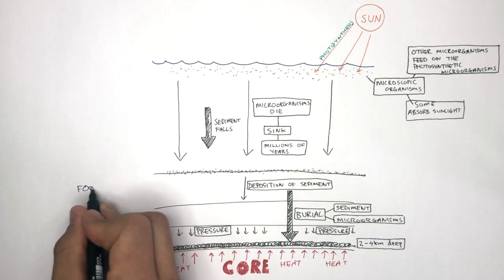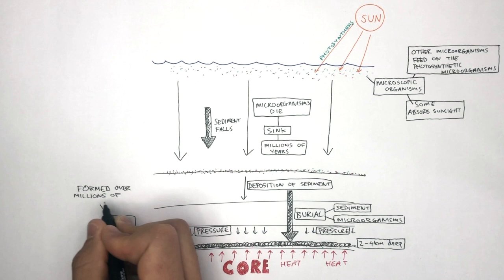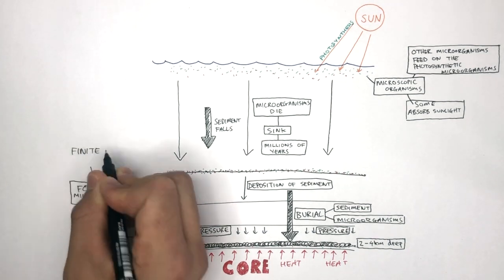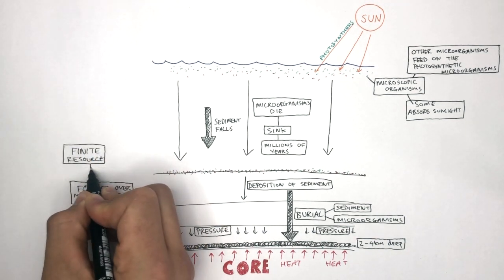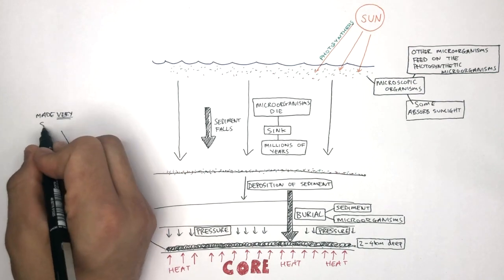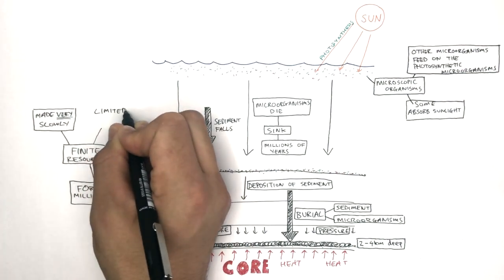This crude oil is formed over millions of years. Crude oil is a finite resource because it is made very slowly and there's a very limited supply.